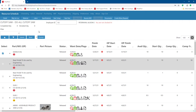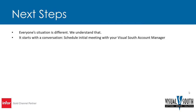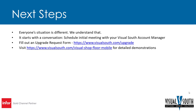Of course there is a lot more functionality available — we have video features on our website at VisualSouth.com. For next steps: everyone's situation is different and it starts with a conversation. If you have questions about upgrading or aren't sure which version to upgrade to, schedule a call with your Visual South account manager — Tim O'Brien or Brian Foshee — or feel free to email us. We have an upgrade request form at VisualSouth.com/upgrade to get an estimate on what an upgrade would cost. For more detailed shop floor mobile functionality, we have a video series at VisualSouth.com/Visual-Shop-Floor-Mobile.